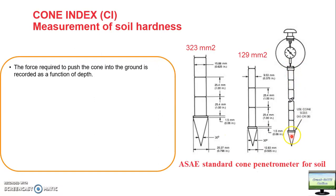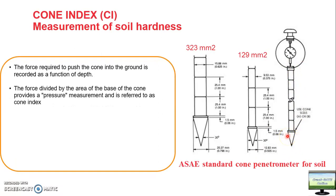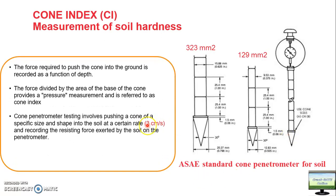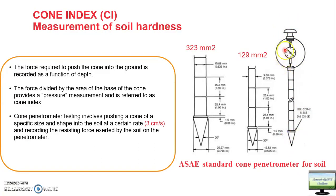There are two standard cone sizes: 129 mm² cone area and 323 mm² cone area. You push the cone into the soil at a particular rate of 3 cm per second. You apply force and the cone penetrates the soil. Initially you set the dial gauge to zero, and once you apply force and the cone reaches a certain depth, you measure the force applied using the dial gauge reading.